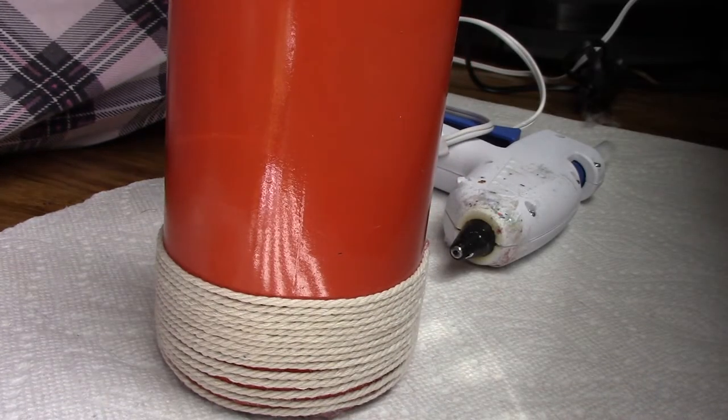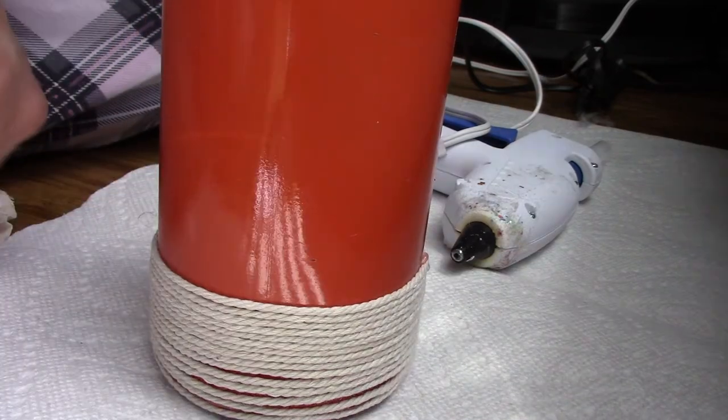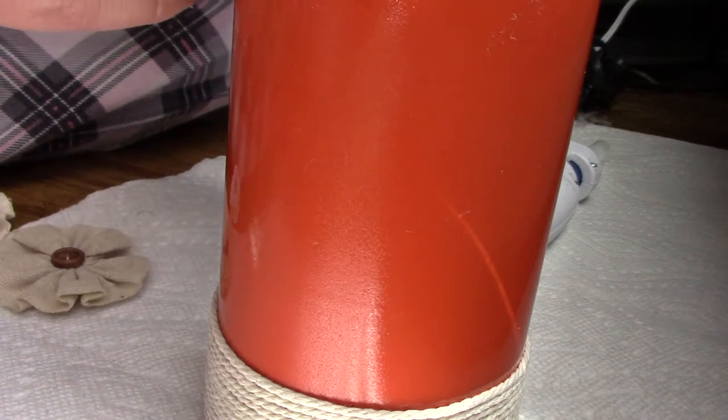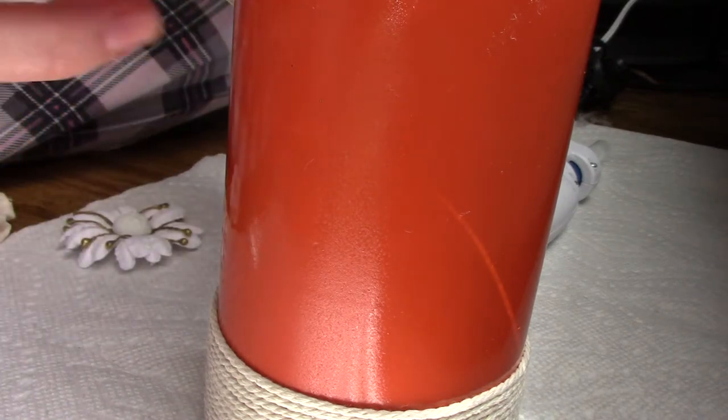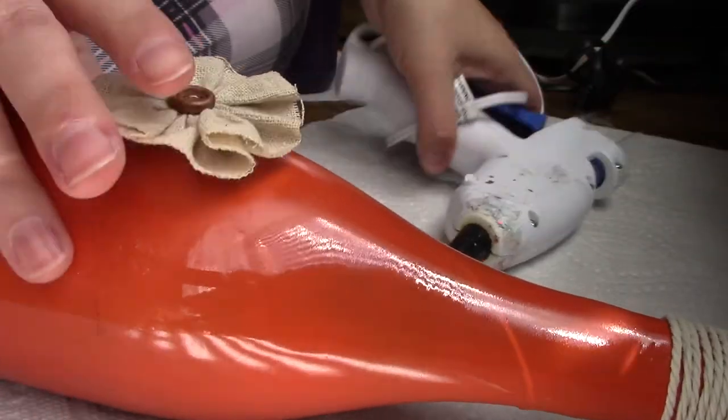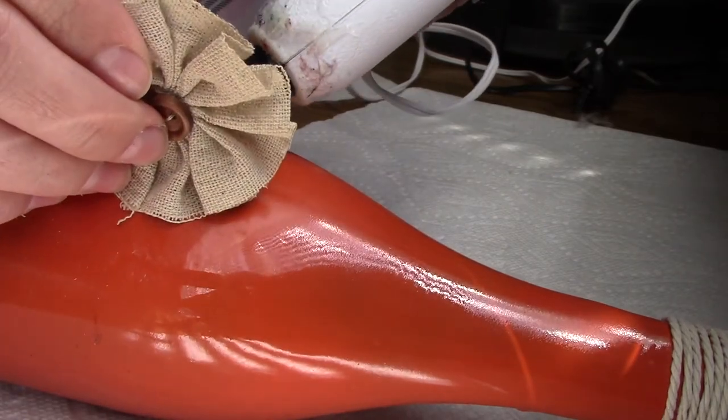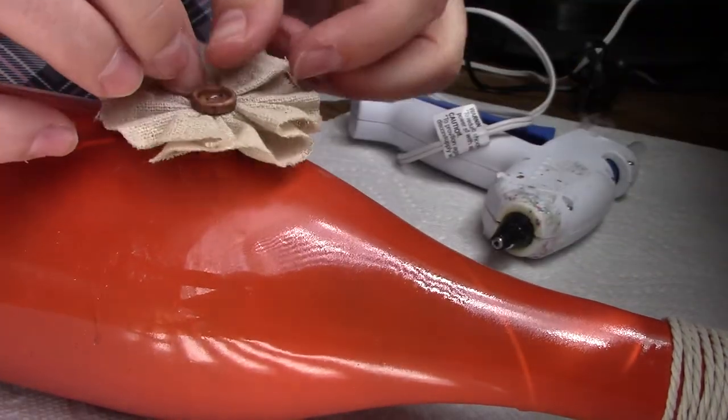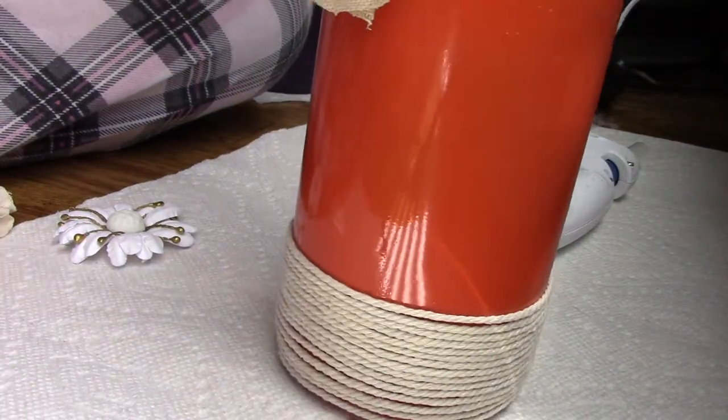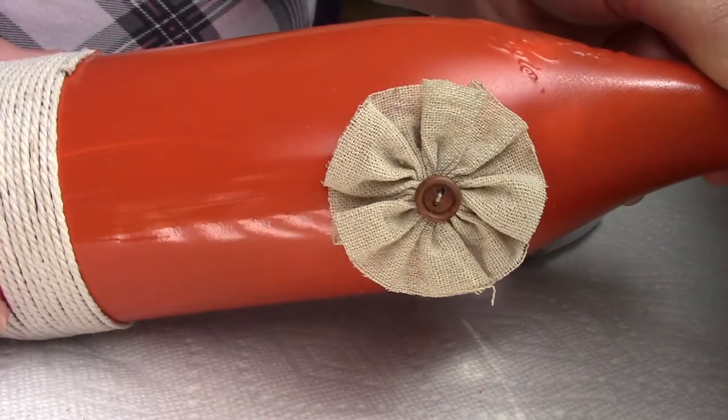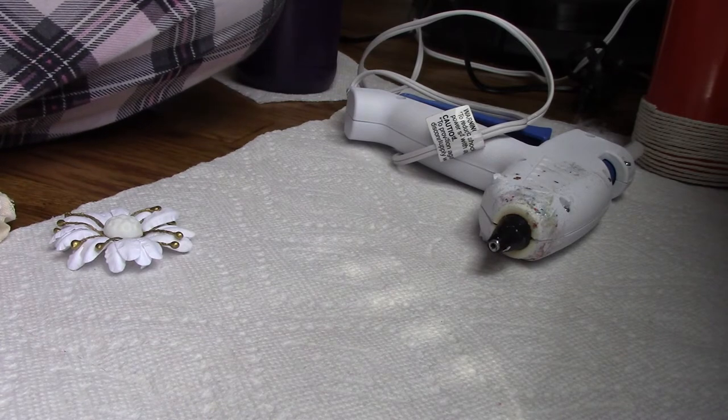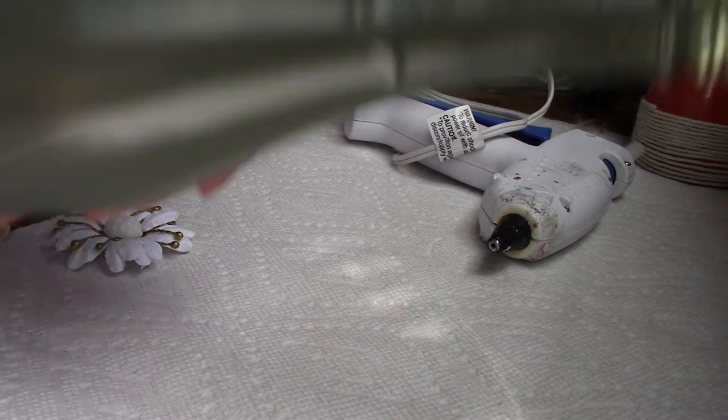Just like that. So for this bottle, I think I want to use this one. So I'm going to glue my flower to it, right in the center, so that it looks like that. I'm going to set this one aside, and I'm going to work on another one.